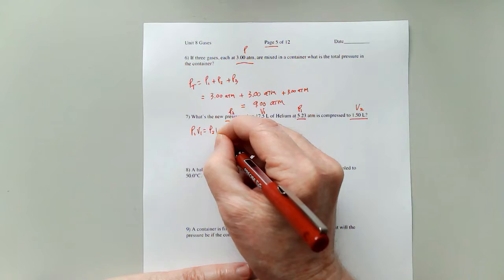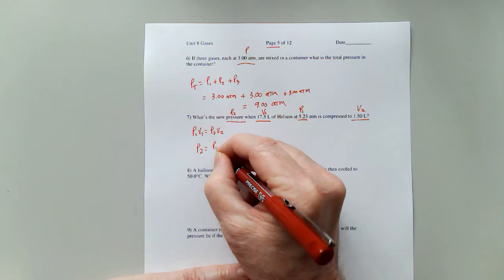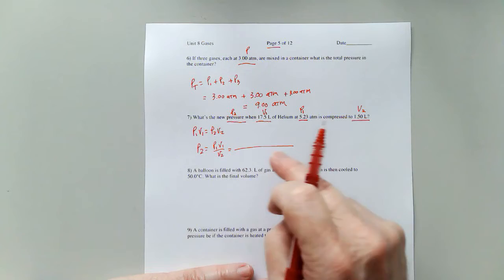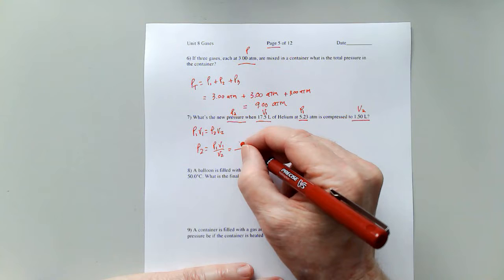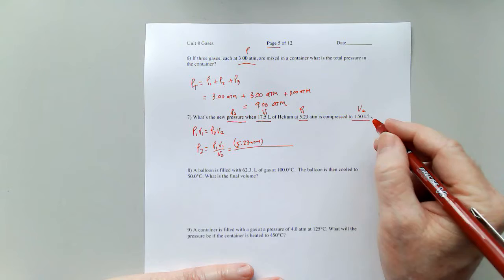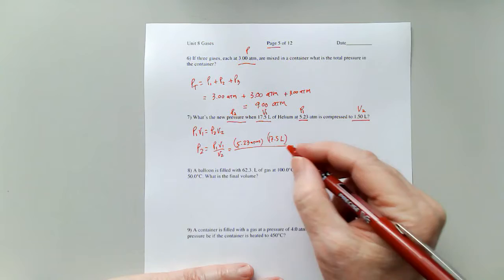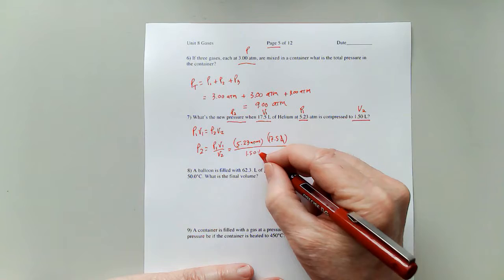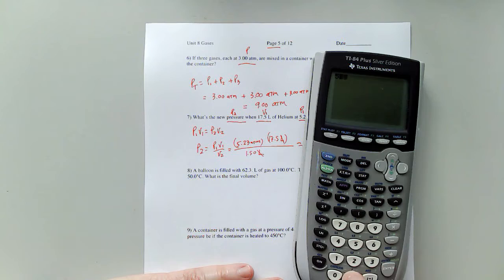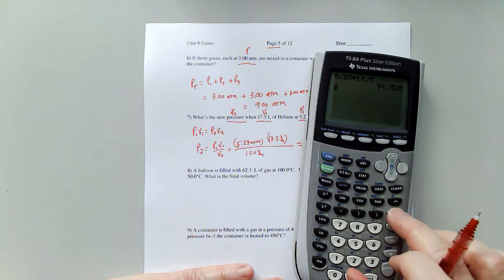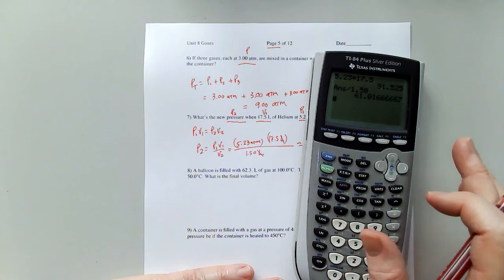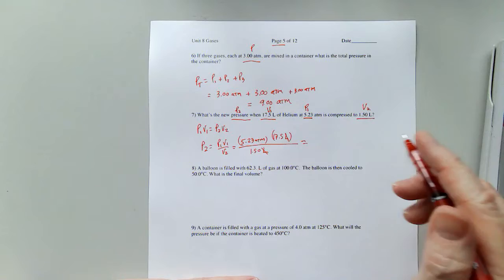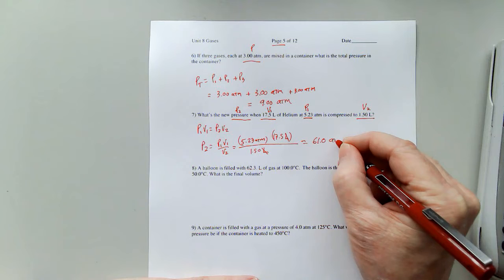P1 V1 equals P2 V2. I want P2, which equals P1 V1 divided by V2. It's always good to write all your equations first before we get started. So P1 is 5.23 atm, V1 is 17.5 liters, V2 is 1.50 liters. And we're seeing that liters divides out, it cancels. So 5.23 times 17.5 equals, divided by 1.50, and I'm getting 61.01, I'm going to round that to 61.0, 3 sig figs on all of these. So 61.0 atmospheres. Pretty high pressure.